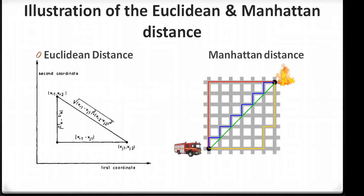We have an illustration showing how to compute Euclidean distance from a diagram. You have points xj1, xj2 and xi1, xi2. The distance components are (xi2 - xj2) and (xi1 - xj1). According to the Pythagorean theorem, you can derive the Euclidean distance formula. When you sum these two component distances directly, you get Manhattan distance; when you apply the Pythagorean approach, you get Euclidean distance.